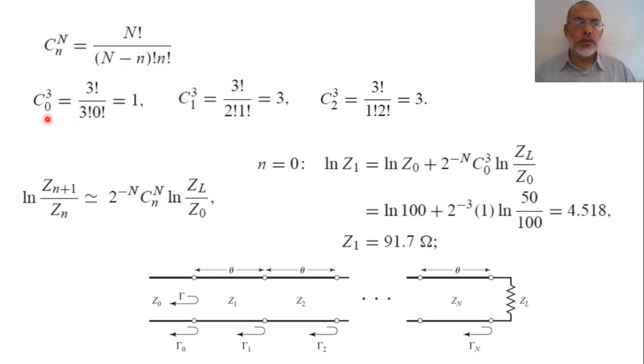In this case, C0 would be 1, C1 would be 3, C2 would be 3, and C3 would be 1.